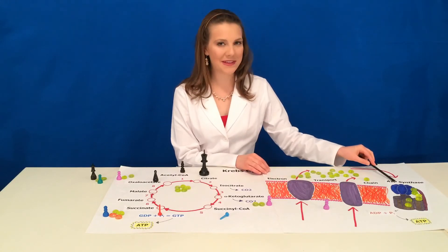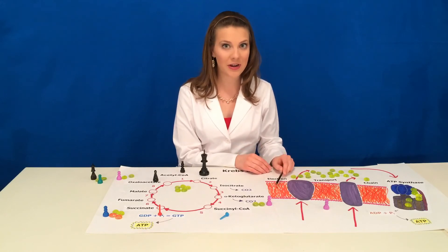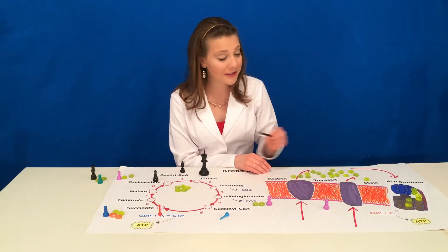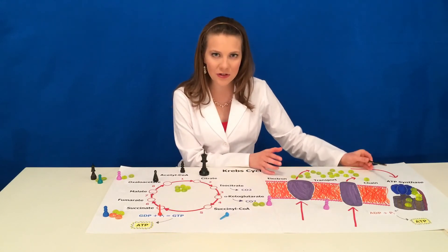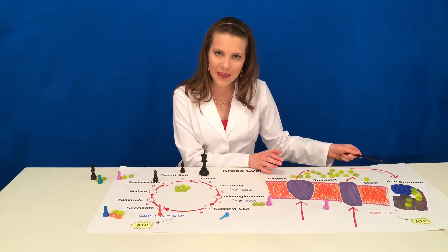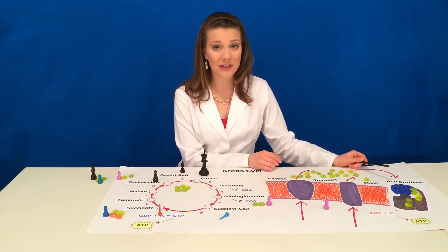This is important because the ATP synthase is responsible for forming the majority of ATP in cellular respiration. But the only way it works is if these electrons are flowing through it. If we didn't have these electrons out here, there would be no way for the ATP synthase to run, which means that the cell would die.